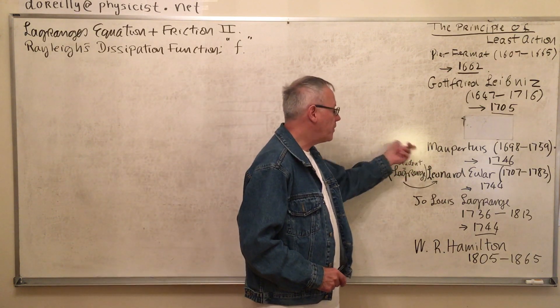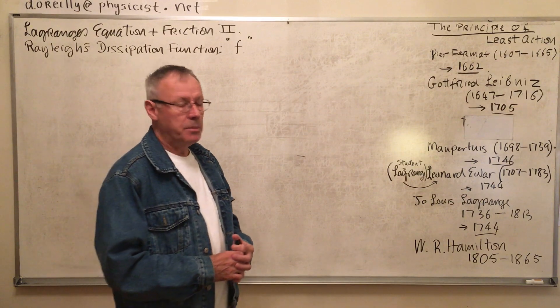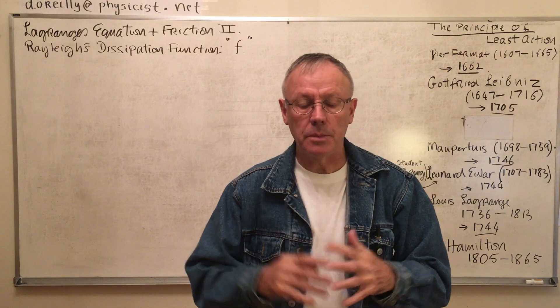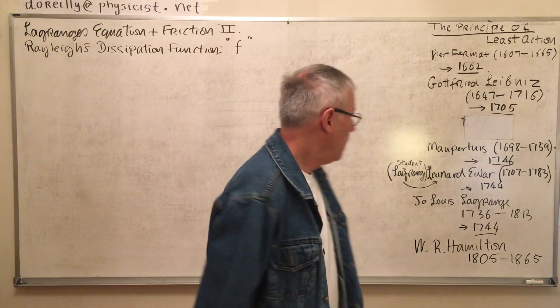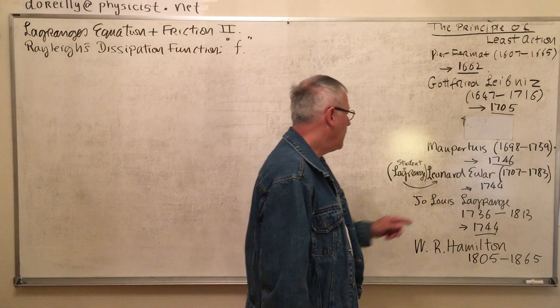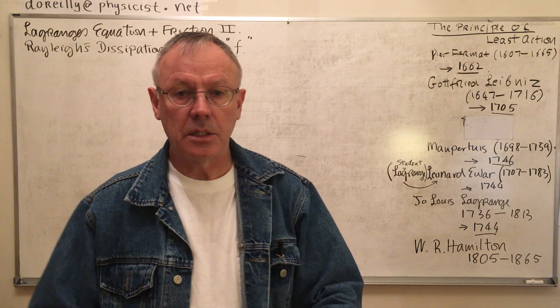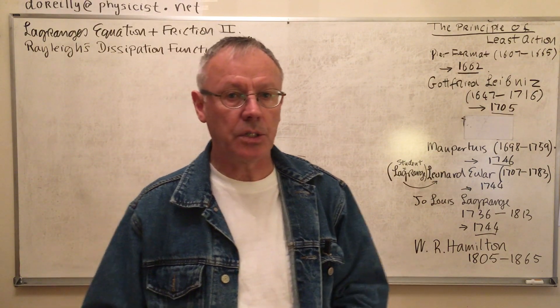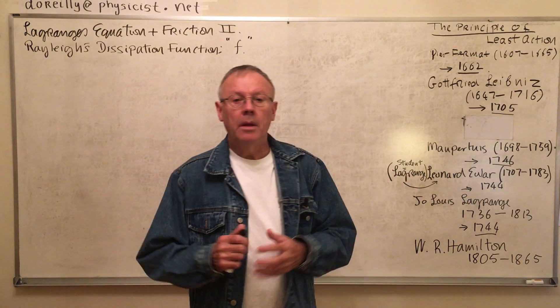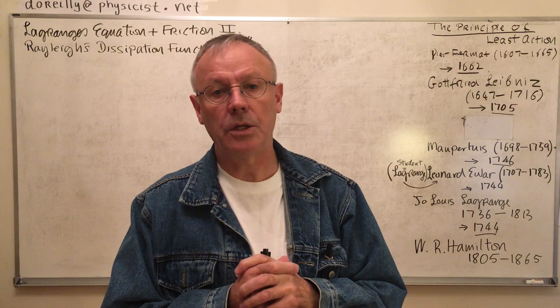Now, Maupertuis, I don't know his first name, 1698 to 1759, has a principle which is also a mechanics principle of least action. I think that's the first time it really comes in as a strong principle. And he did that in 1746. Leonard Euler, Calculus of Variations. There's an Euler equation in the Calculus of Variations, but it's the same as the Lagrange's equation in mechanics. Now, interestingly, Euler had a student. Guess who the student was?